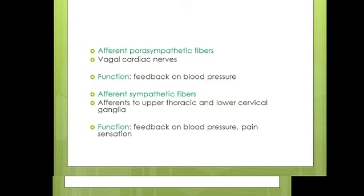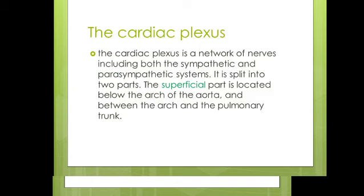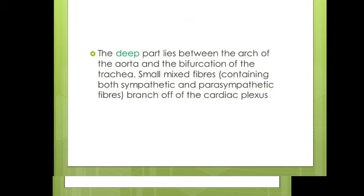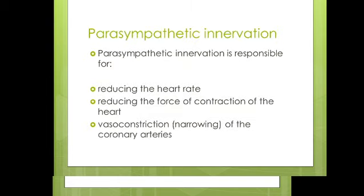The upper thoracic and lower cervical ganglia function for feedback and pain sensation for the cardiac plexuses, which form a network — the same path of Sympathetic and Parasympathetic systems. This includes a superficial part between the aortic arch and pulmonary trunk, and a deep part of the aortic arch at the bifurcation of the trachea.